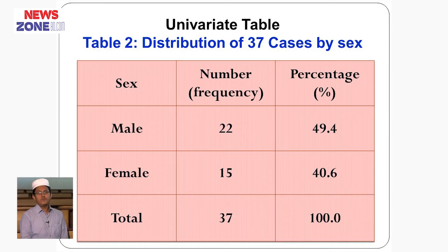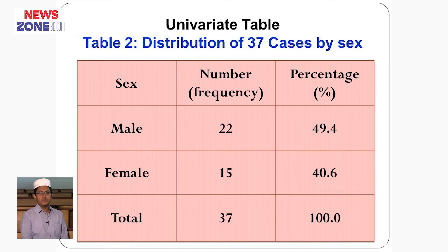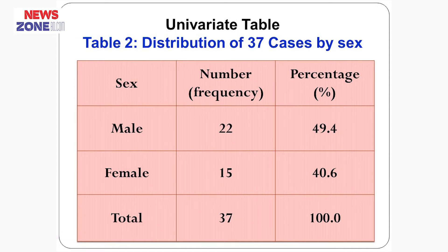This is another example of a univariate table. Here, only sex is the variable being presented. Male is 22 in number, that is 59.4 percent. Female is 15 in number and it is 40.6 percent. The total number of people is 37 and total percentage is 100 percent. In this table, only one variable is presented, so it is a univariate table.